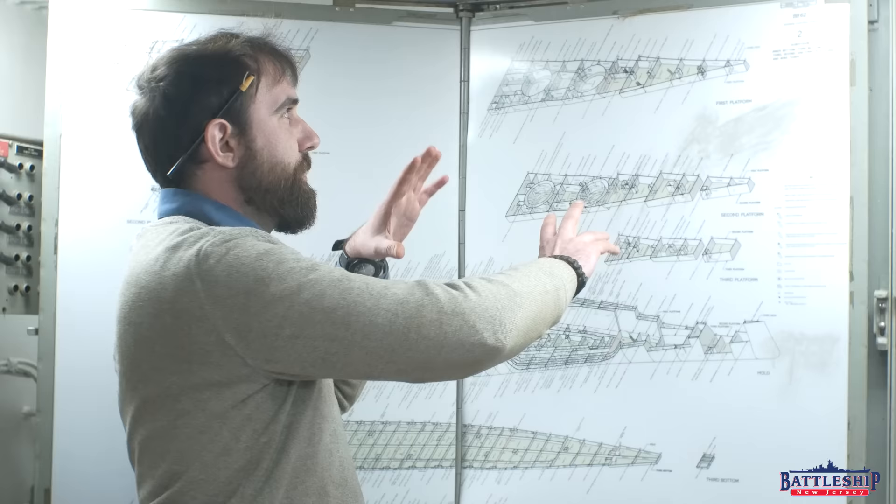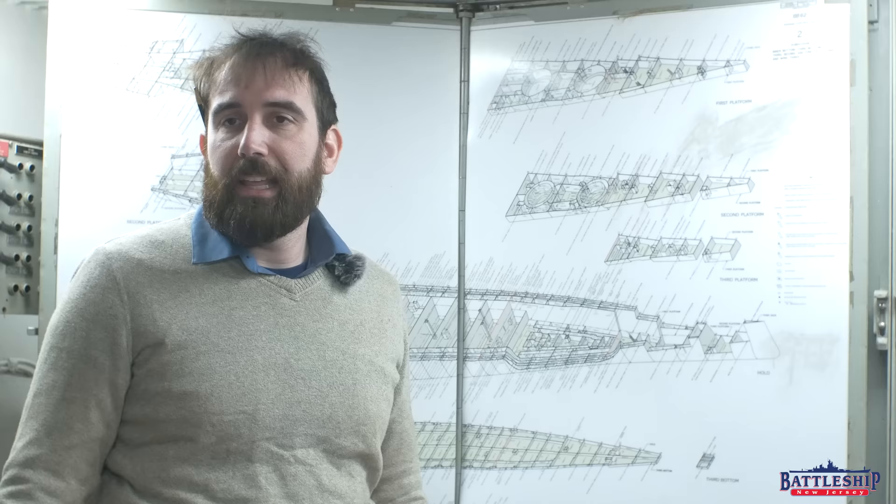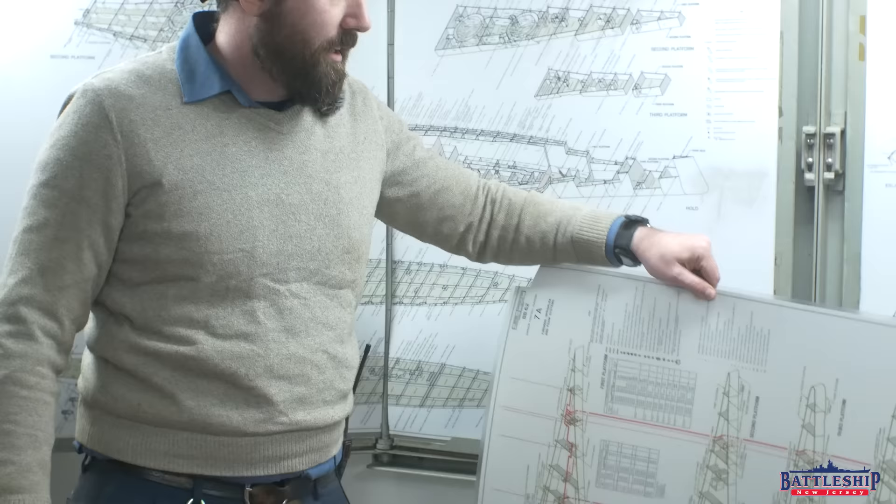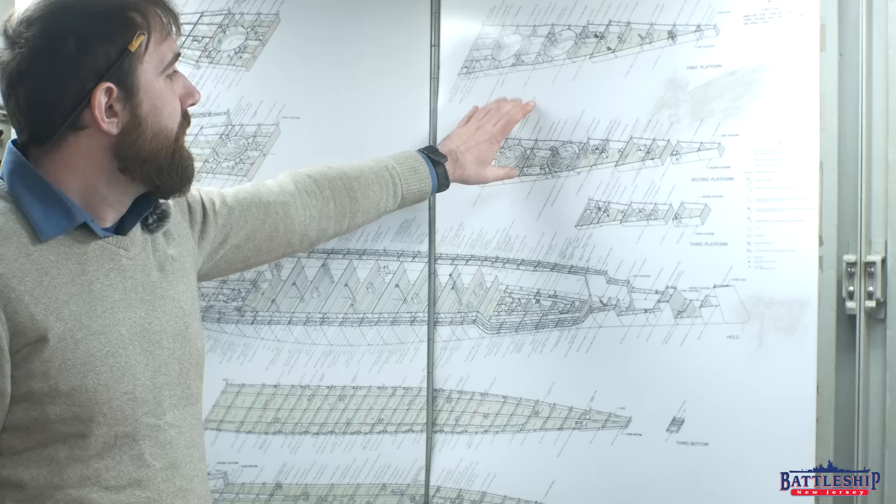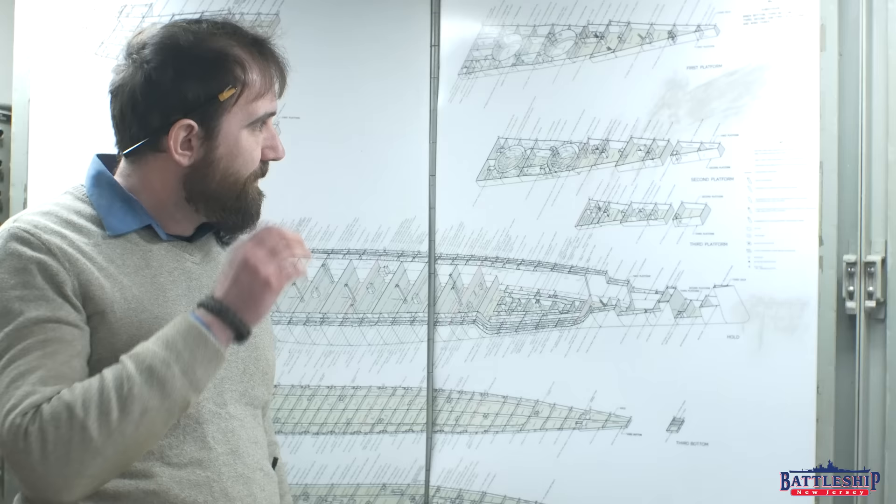On a normal sized ship, you might have your full booklet of general plans on one of these folding boards. On an Iowa class Battleship, no. So there's over 80 plates that make up our Damage Control Plates, so we've got more stored down here that we can access. So if the plates that we need are not up, we can get the right ones. So this one, our subdivision of the lower decks, is what we're going to start with.